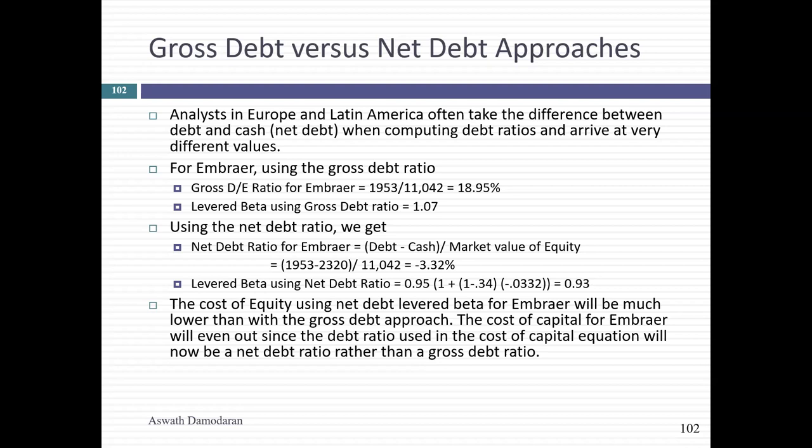Why is the debt ratio negative? Simple: if your cash balance exceeds your total debt, your net debt ratio is negative. Apple has a negative net debt ratio — in fact almost every FANGAM stock does. If you use the net debt ratio route, don't replace a negative with zero; carry it through. If you have a negative net debt-to-equity ratio, your levered beta will actually be lower than your unlevered beta.